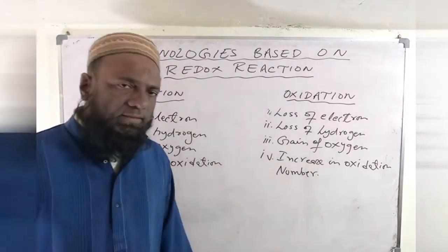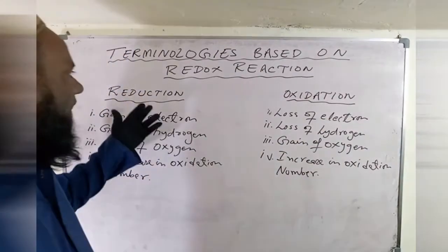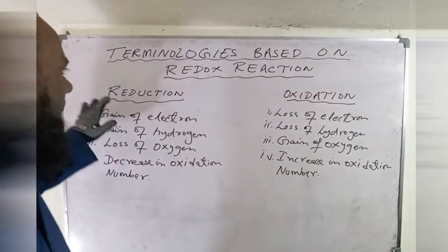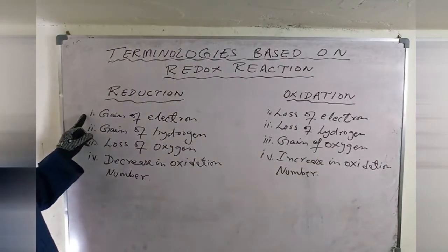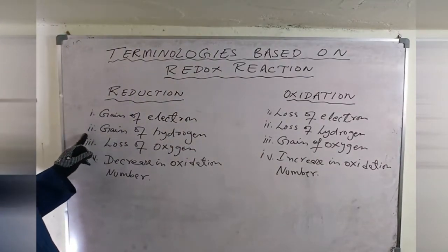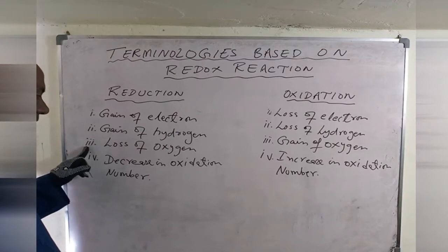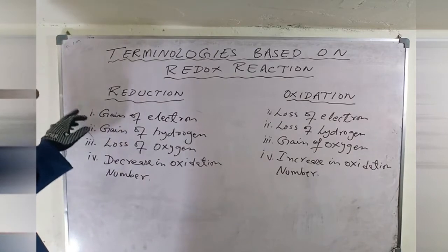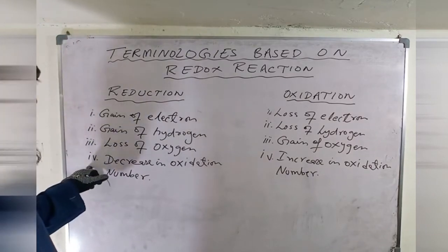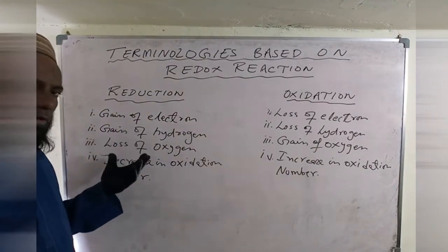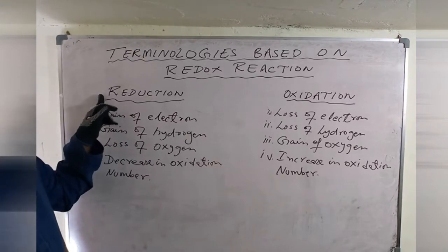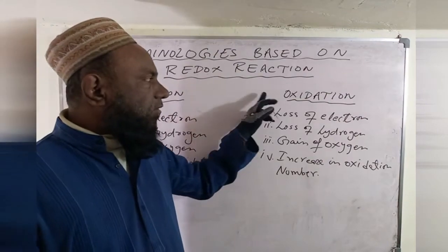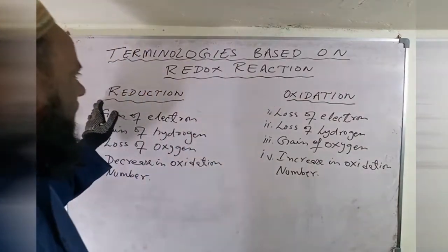Now we will discuss what is reduction and what is oxidation. The definition of reduction is: gain of electron, gain of hydrogen, loss of oxygen, and decrease in oxidation number. If any one of these four processes is occurring, it will fall under the category of reduction. Similarly, oxidation is the opposite of reduction.